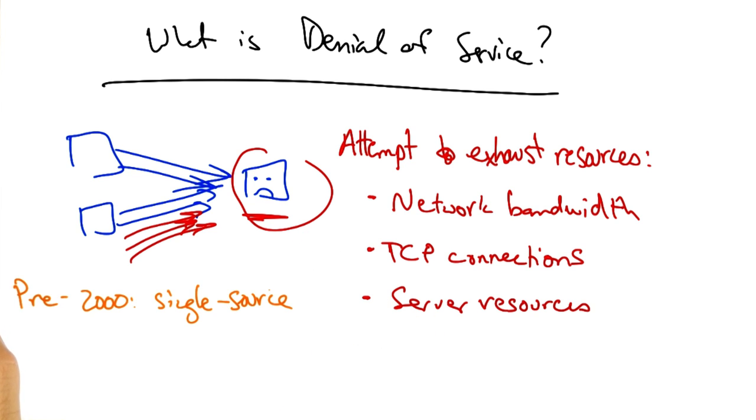Before 2000, these denial of service attacks were typically single source. After 2000, with the rise of internet worms as we saw in an earlier lesson, these attacks could become distributed, effectively being launched from many attackers.